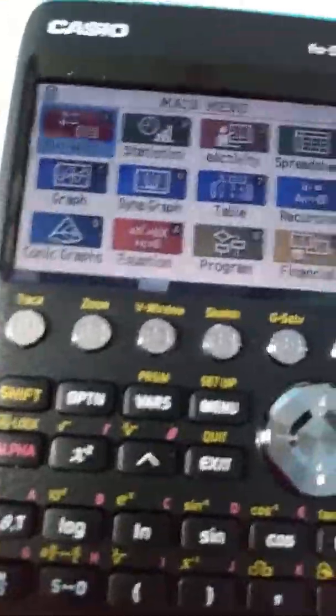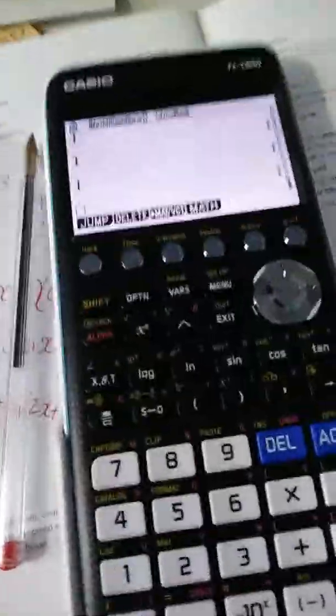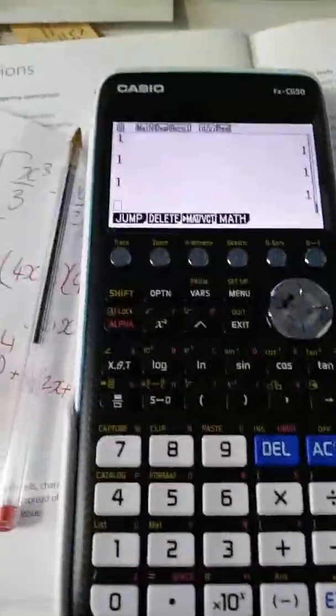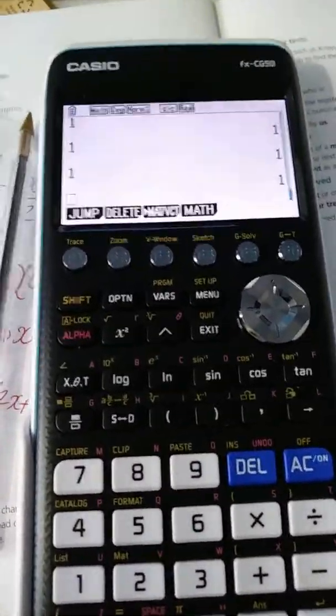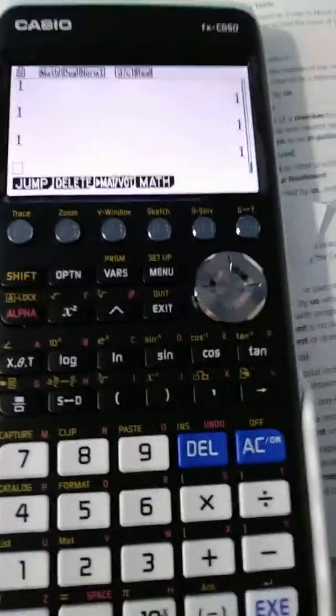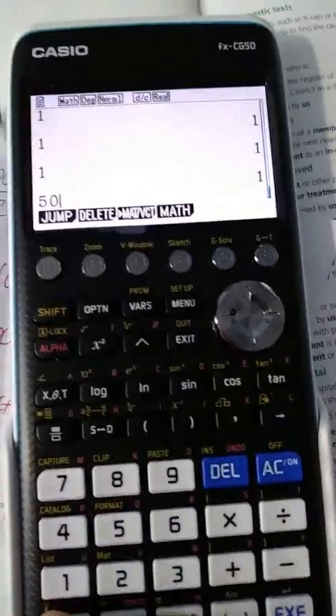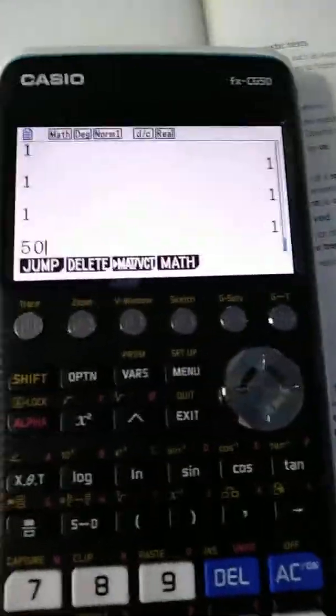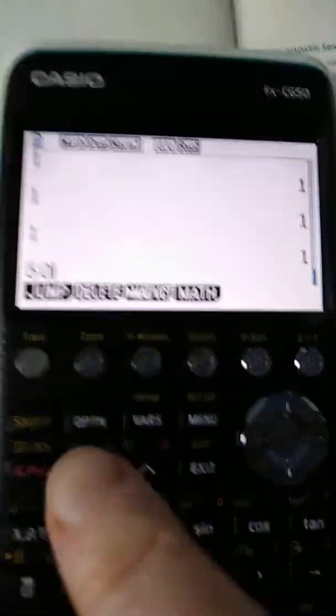So we want to do the first question which is convert 50 kilometers per hour into meters per second. So put in the 50, just type in 50, then you need to press the OPTN button, the option button.